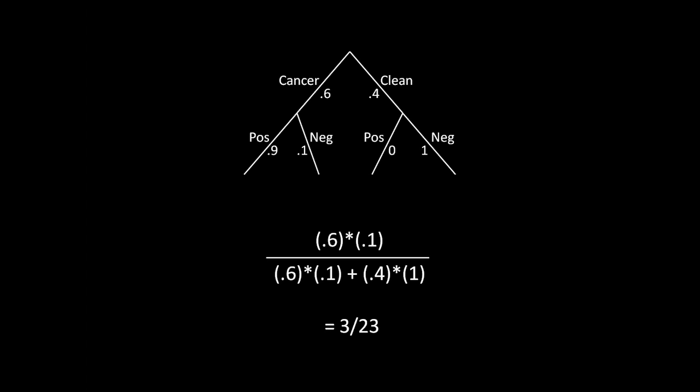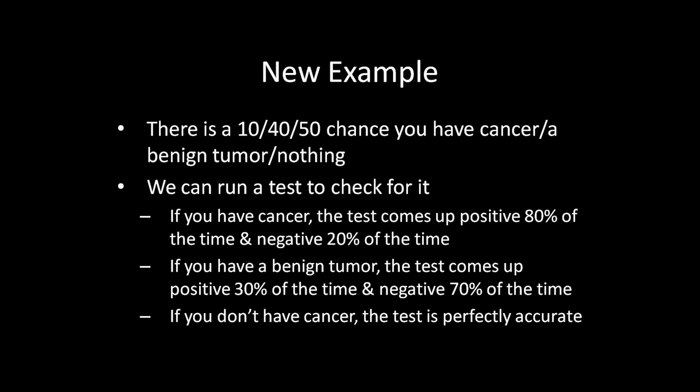That was one example and relatively simple. However, this is hiding something which might not be apparent the first time you look at Bayes' Rule. Let's look at a more complicated example. We're still looking at cancer, but instead of just cancer or clean, you can have cancer, a benign tumor, or nothing. Specifically: 10% chance you have cancer, 40% chance it's benign, and 50% chance you have nothing at all.